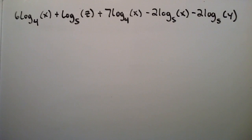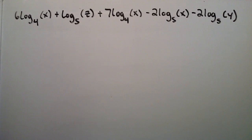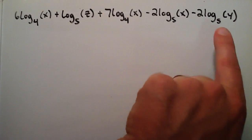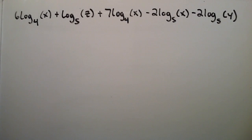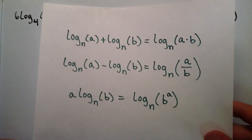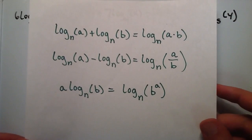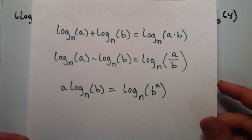Hey everybody, this is Paul. This is lesson number 12 in the series of logarithm tutorials. In this lesson I'm going to show you how you can take an expression like this and condense it down into a much simpler form. In order to do this, I'm going to be using some properties of logarithms that I've explained in my earlier tutorials.